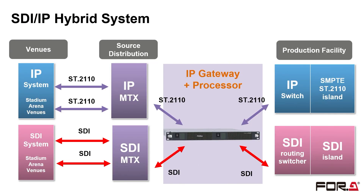The FA1616 can be used at various locations within a system for different purposes. In IP-SDI hybrid environments, it can be used as an IP gateway to connect between IP and SDI. In a production facility, the FA1616 can be used to convert and adjust video using various process functions.